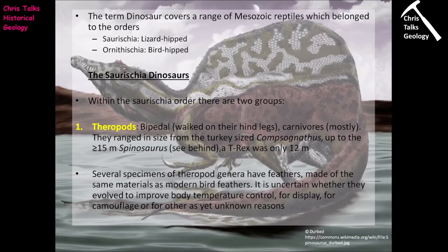The dinosaurs fall into two broad groups: the Saurischian dinosaurs and the Ornithischian dinosaurs. We'll start with the Saurischians, which has two subclades: the theropods and the sauropods — beginning with the theropods. The theropods were a group of bipedal dinosaurs that walked on their hind legs and were mostly carnivorous, ranging in size from turkey-sized dinosaurs all the way up to the massive Spinosaurus, which would have been in excess of 15 metres in length. A fully grown adult Tyrannosaurus rex was about 12 metres, so Spinosaurus was a pretty gargantuan animal.